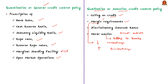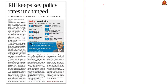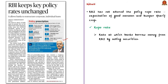These are certain ways in which RBI qualitatively controls the flow of credit. Now, the news article reports that Reserve Bank of India has not altered the policy repo rate. Repo rate is the rate at which banks borrow money from the RBI by selling securities to the Reserve Bank of India, with an agreement to repurchase those securities on a mutually agreed future date at an agreed price.